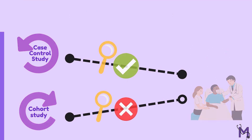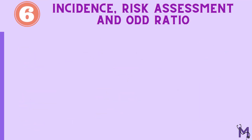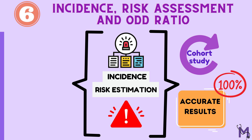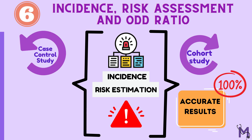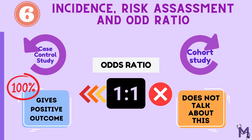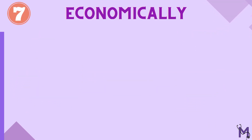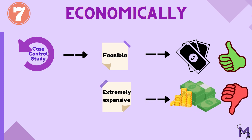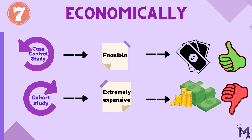A cohort study provides accurate results regarding incidence and risk estimation, whereas a case-control study does not address incidence rates and only talks about the odds ratio. This is another key difference between the two. Economically, case-control studies are more feasible compared to the extremely expensive cohort study.